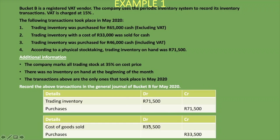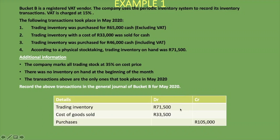Alternatively, instead of two separate journal entries for transaction four, you can combine them: debit Trading Inventory R71,500, debit Cost of Goods Sold R33,500, and credit Purchases with the total of both debits — R105,000. This matches the total purchases amount recorded in our journal entries.